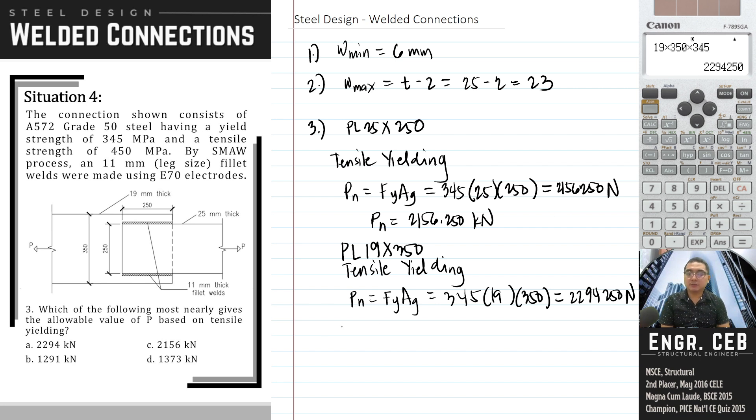Therefore, for the allowable value of P, we compare demand versus capacity. Each plate is different in dimension. The demand for both plates is the same, P. Both have the same demand P.